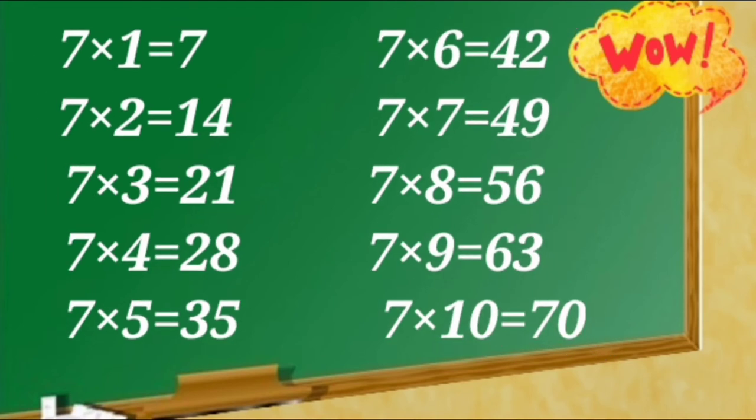7 ones are 7, 7 twos are 14, 7 threes are 21, 7 fours are 28, 7 fives are 35, 7 sixes are 42, 7 sevens are 49, 7 eights are 56, 7 nines are 63, 7 tens are 70.